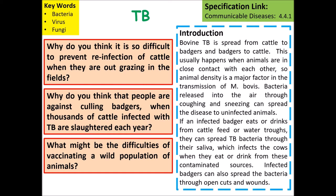Bovine tuberculosis is spread from cattle and badgers to other cattle and badgers, usually when animals are in close contact with each other, so animal density is a major factor in transmission. Bacteria released into the air through coughing and sneezing can spread the disease. If an infected badger eats or drinks from cattle feed or water troughs, it can spread tuberculosis bacteria through saliva, infecting cows. Infected badgers can also spread the bacteria through open wounds and cuts.